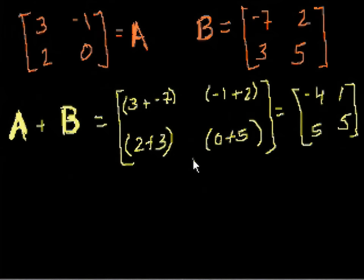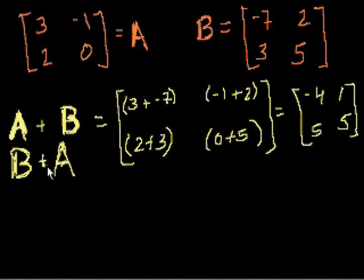And by this definition, you can imagine that this is going to be the same thing as B plus A. Remember, this is something we have to think about, because we're not adding numbers anymore. You know that 1 plus 2 is the same thing as 2 plus 1. But matrices, it's not completely obvious. But when you define it in this way, it doesn't matter if we do A plus B or B plus A. If we did B plus A, this would just say negative 7 plus 3. This would say 2 plus negative 1. But it would come out to the same values. That is matrix addition.